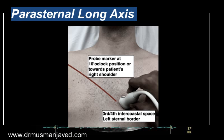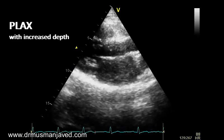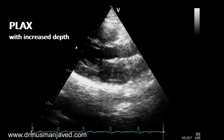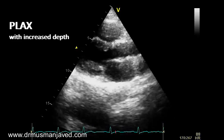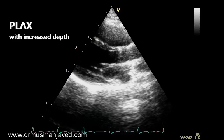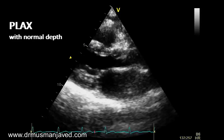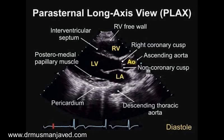Let's start with recording the parasternal long axis with the patient lying in left lateral position. This window is obtained by placing the probe in the fourth left intercostal space with the pointer towards the right shoulder. The first step of the protocol is to record the 2D image of parasternal long axis with increased depth so we may not miss pericardial effusion. In the next step, record the same with normal depth.